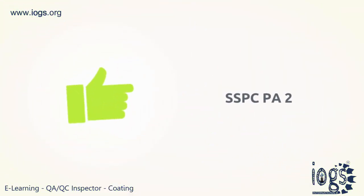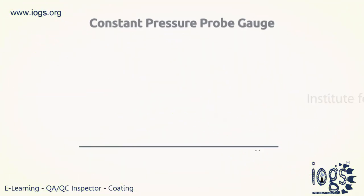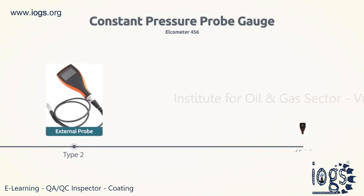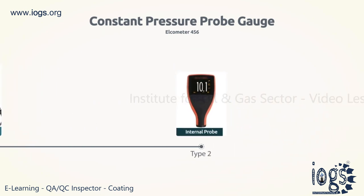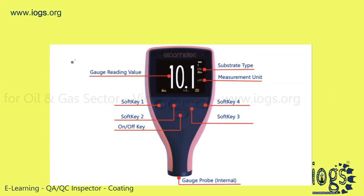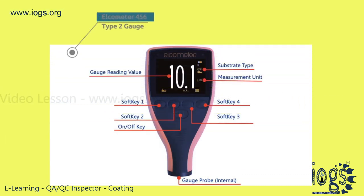The SSPC-PA2 remains the most widely used. This video offers simple directions on how to use a constant pressure probe type 2 gauge to determine the dry film thickness. The Elcometer 456 gauge comes with a digital colored screen, with soft keys designed to perform multiple functions.